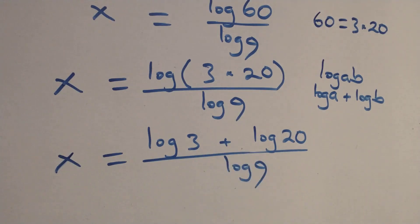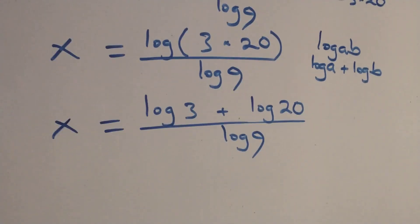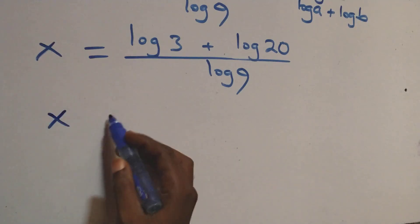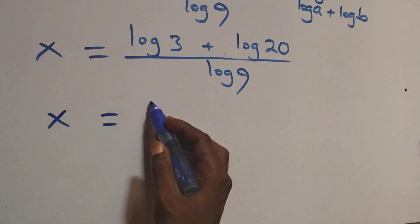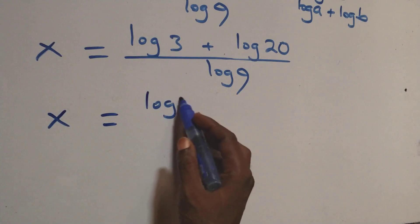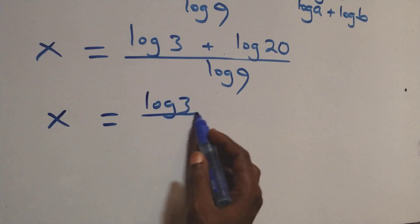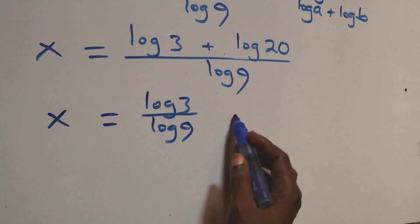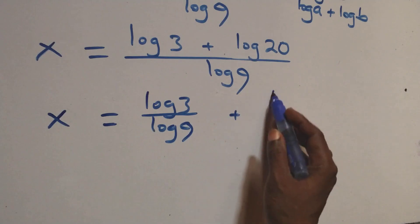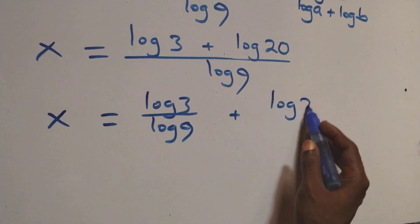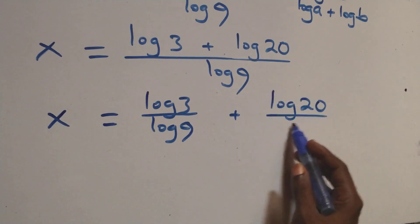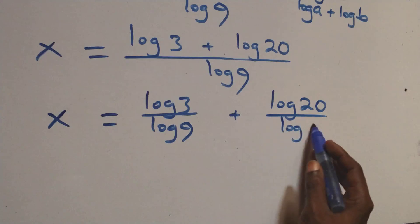We then separate this into two fractions: x = log(3)/log(9) + log(20)/log(9).